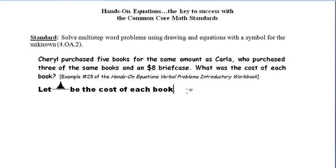Now we are told that she purchased five books for the same amount as Carla. So on one side of our balance scale we're going to place four blue pawns. We're going to draw four shaded triangles to indicate the cost of the five books, and on the other side she purchased three of the same books and an $8 briefcase. So this then would be our pictorial equation where the triangle represents the cost of each book.